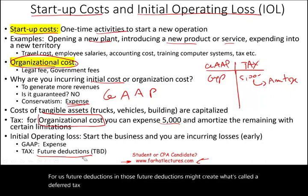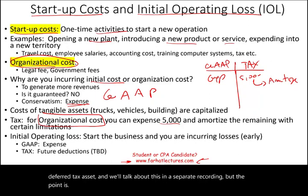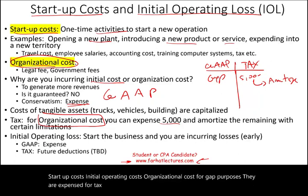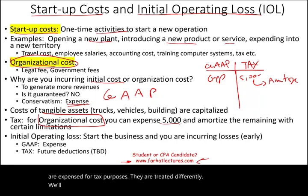We'll talk about the deferred tax asset in a separate recording. But the point is: startup costs, initial operating costs, and organizational costs — for GAAP purposes, they are expensed. For tax purposes, they are treated differently. We'll talk about those later on.